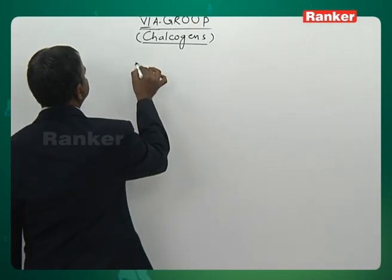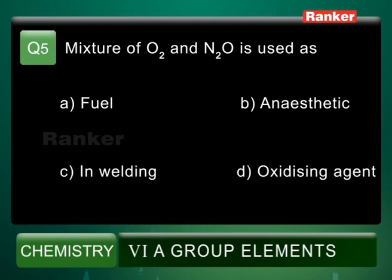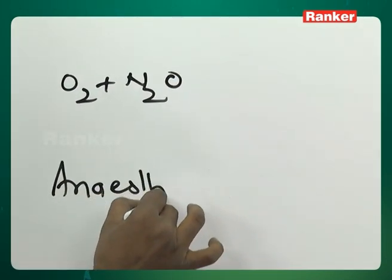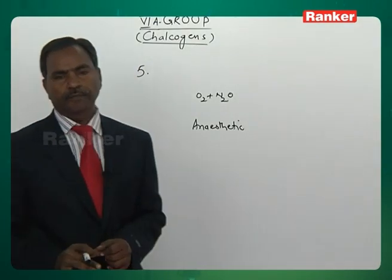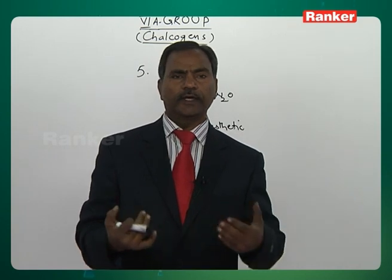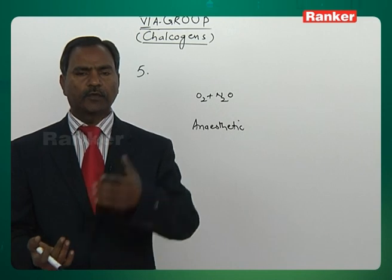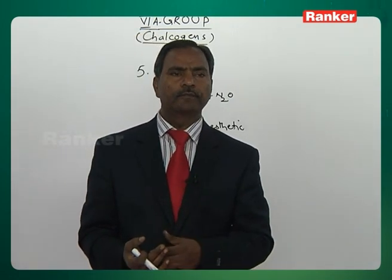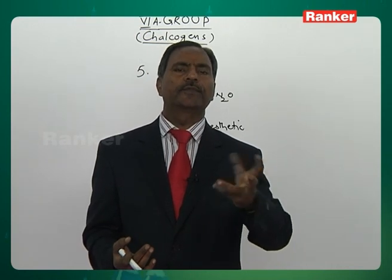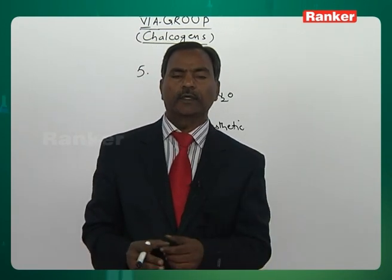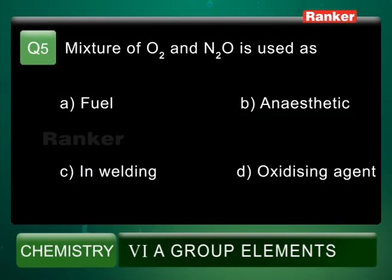Question number 5: A mixture of O2 and N2O is used as A) fuel, B) anaesthetic, C) in welding, or D) oxidizing agent. N2O is actually a gas that on inhaling moderate quantities generates hysterical laughter, and is commonly known as laughing gas. When mixed with a small required amount of oxygen, it produces anaesthesia. Therefore, a mixture of O2 and N2O is used as an anaesthetic gas. For question number 5, the answer is B.